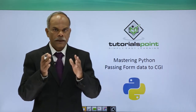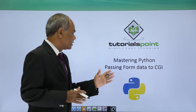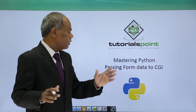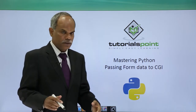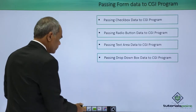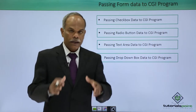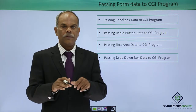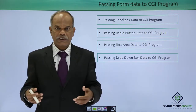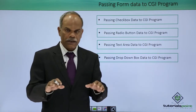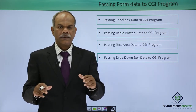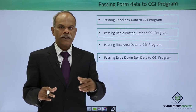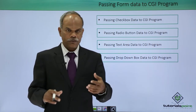Hello friends. In this section we shall see how to pass the data from an HTML form to the CGI script. In HTML, you can create a form for user interaction. The user can enter or select certain data. There are different kinds of form elements by which the user can interact with the software or with the program.